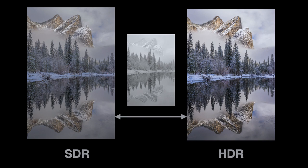One of the interesting things about gain maps is that they work in both directions. That means the base rendition could be either SDR or HDR. We'll see a little bit later why you might want to choose the base to be one or the other.